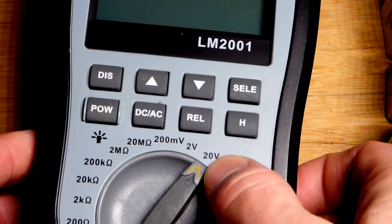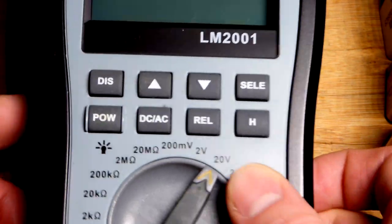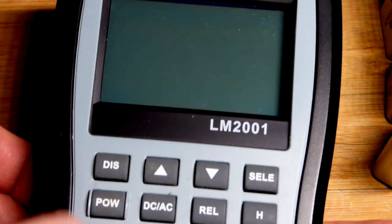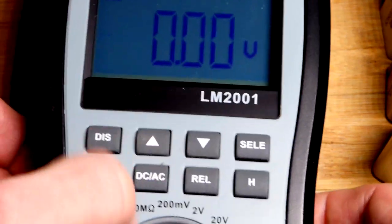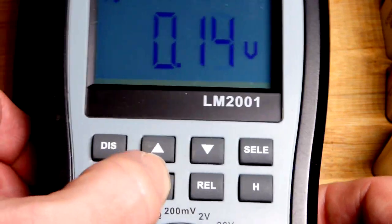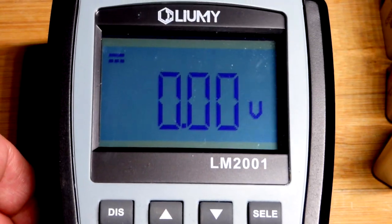For the non-auto-ranging meter, we need to set it to a voltage higher than we can expect to measure and hit the power button. It is set for DC. We can switch it to AC if we want, but we're going to measure DC in this video.